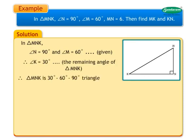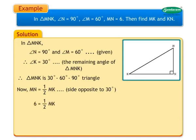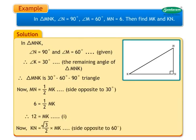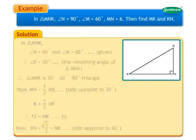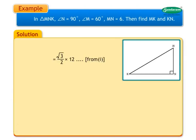Therefore, triangle MNK is a 30-60-90 degrees triangle. Now, MN is equal to 1 upon 2 MK as it is the side opposite to 30 degrees. So 6 is equal to 1 upon 2 MK. Therefore, MK is equal to 12. Mark this as statement 1. Now, KN is equal to root 3 upon 2 into MK as it is the side opposite to 60 degrees, which equals root 3 upon 2 into 12 from statement 1. Therefore, KN is equal to 6 root 3.